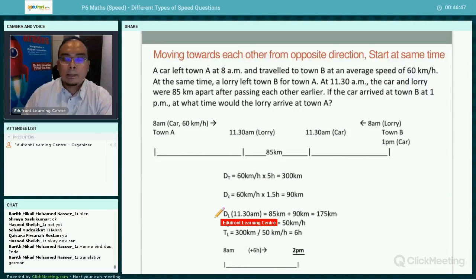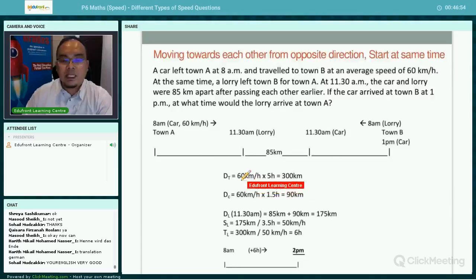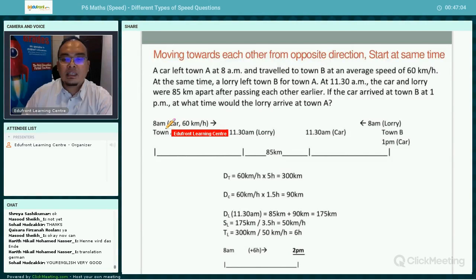Now, first of all, let's calculate. Look at the information given to you and calculate whatever information is missing. Since we know the speed for the car is 60 kilometers an hour, and the car takes 5 hours to travel, you get 300 kilometers.